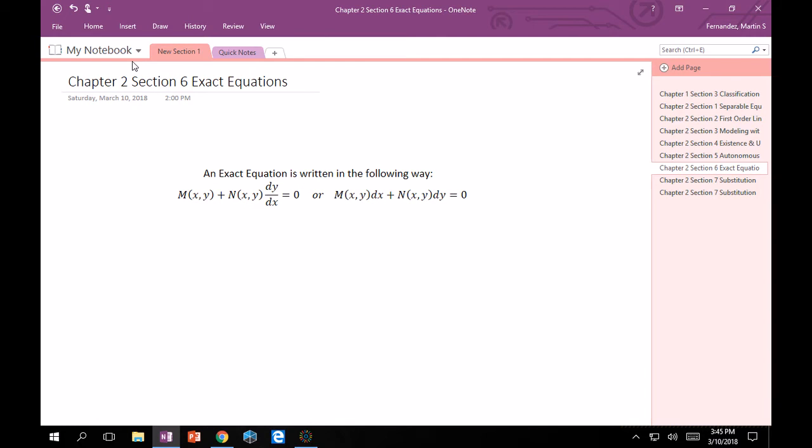So, an exact equation can be written in the following way. It's some function m that is a function of both x and y variables plus another function n that is a function of x and y times dy dx is equal to 0. Or, be very careful, it can also be written in this way of that same function m times dx plus that function n times dy.